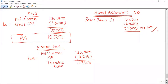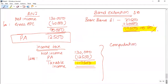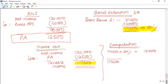So the income tax computation under pension contribution: net income is £130,000 minus personal allowance of £12,500, giving taxable income of £117,500. The basic rate band is now extended to £77,500, so the first £77,500 is taxed at 20%, giving £15,500. The remaining income above £77,500 is taxed at 40%, giving £16,000. Total tax liability is £31,500.